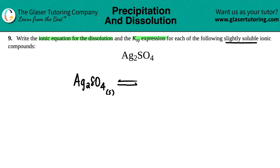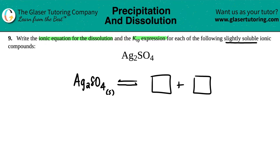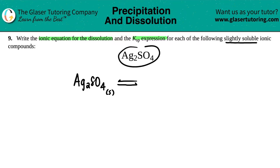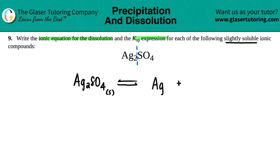Now we just have to figure out what the two components are. Remember, any ionic equation has a positive charge and a negative charge. So what are the two components in Ag₂SO₄? Well, SO₄ — we've seen that time and time again — that's sulfate. So the break has to be between the silver, the Ag, and the SO₄. So I have Ag plus SO₄.